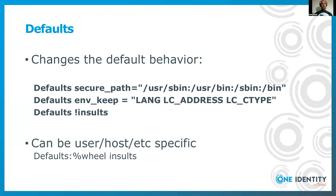Sudo has a huge set of defaults. Most of these make perfect sense, but sometimes you want to override the default behavior. You can do that using the Defaults statements in your sudoers file. Here we override the secure path, which environment variables are kept from the user, and we disable insults for all users. These defaults can also be user- or host-specific; for example, at the bottom of the screen, we enable insults for members of the wheel group.